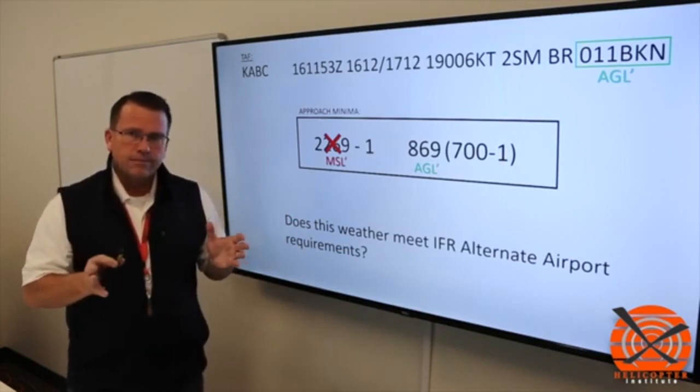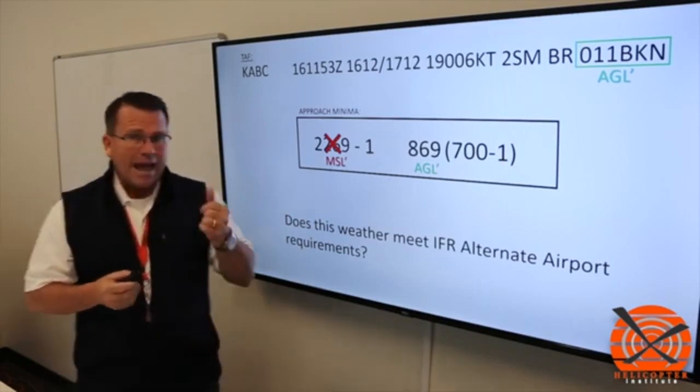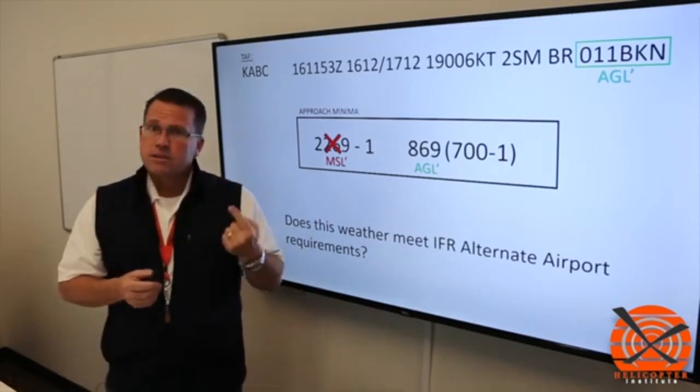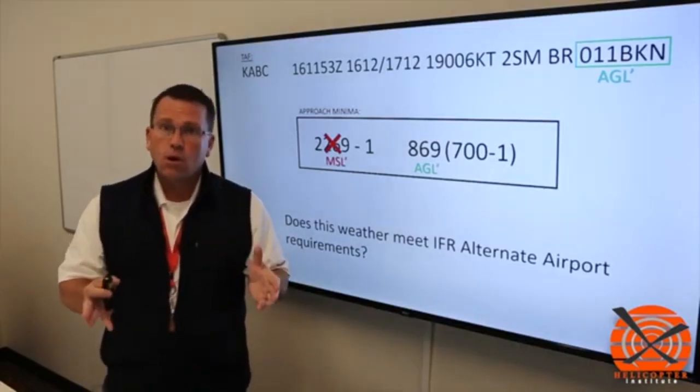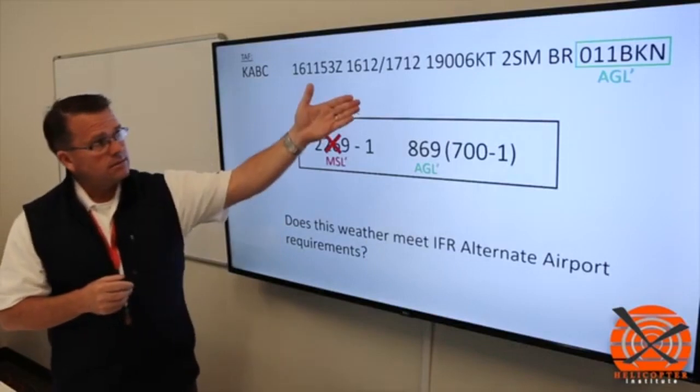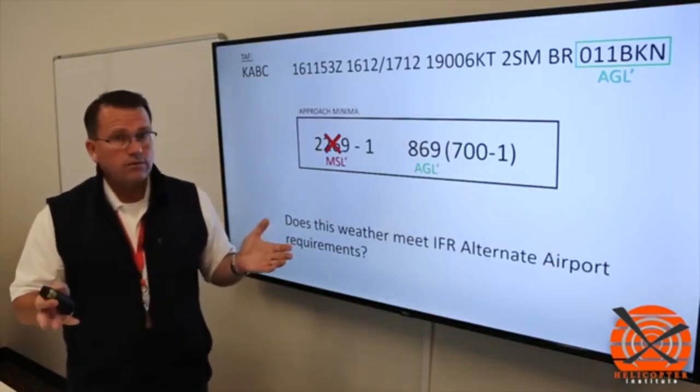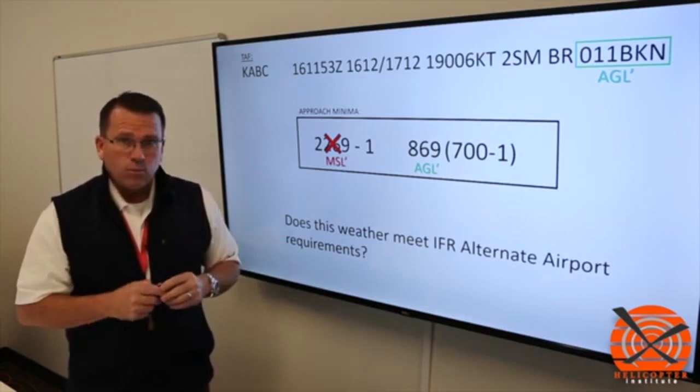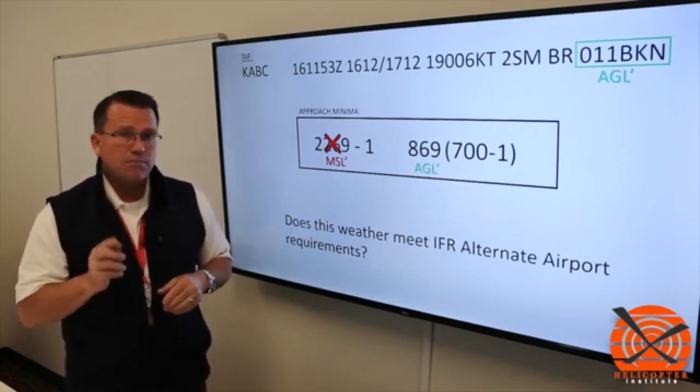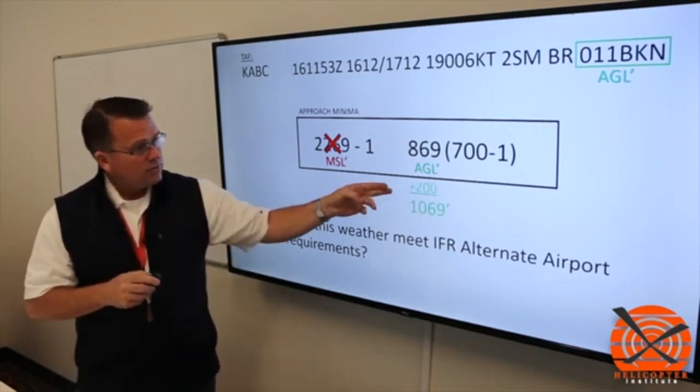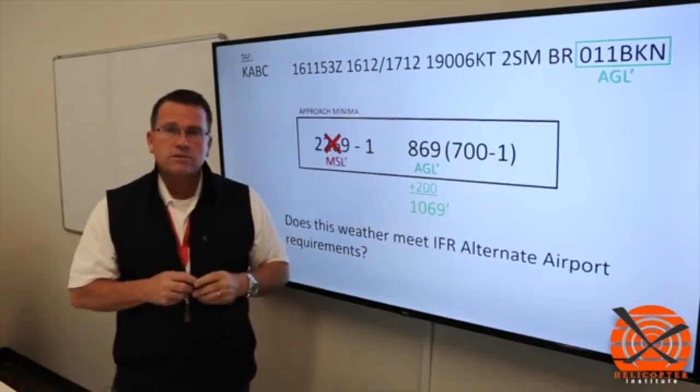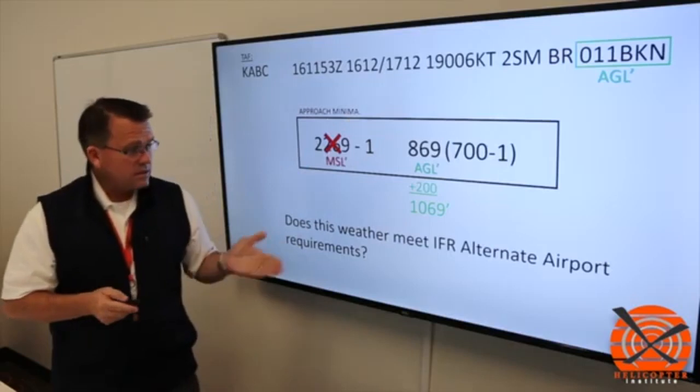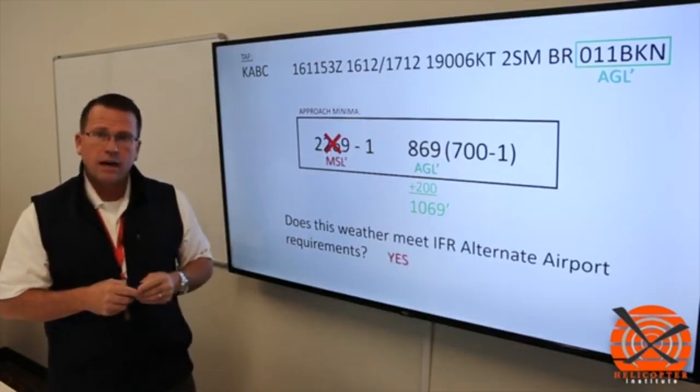Well, the process is the same. So the rule states that at ETA, we must have at least one mile visibility and 200 feet above the approach to be flown. Well, in this case, same thing. We have two statute miles, so we know we have our visibility. But does the math work? So we're going to go ahead and do the same math. We have 200 feet. That gives us 1,069. We're showing 1,100. So the answer is yes. It does work for the IFR alternate.